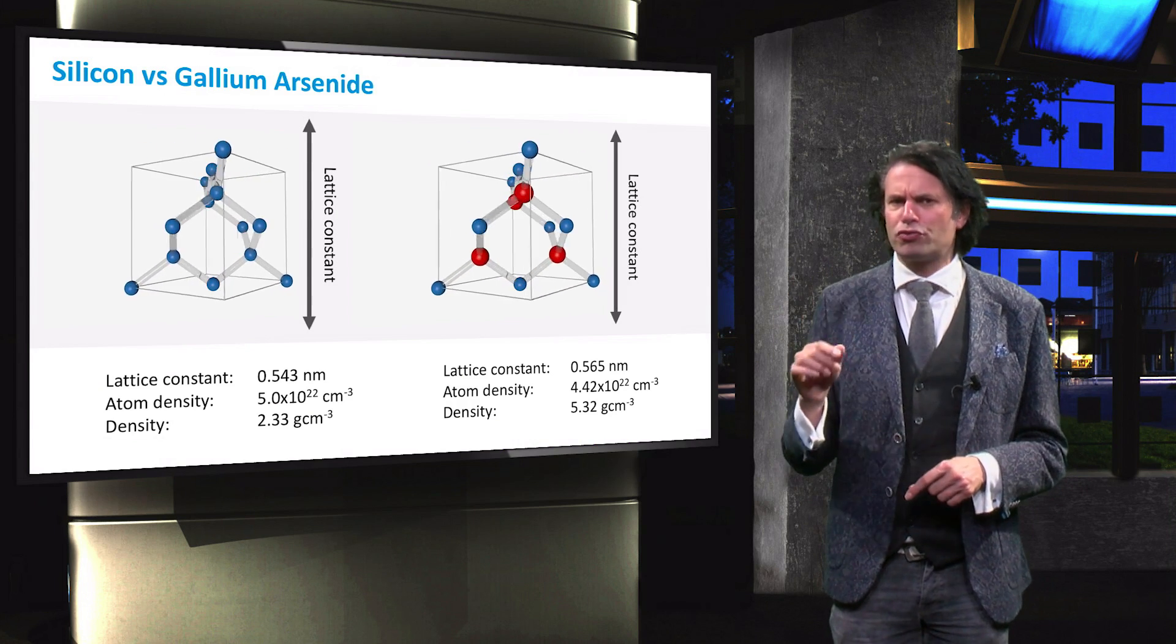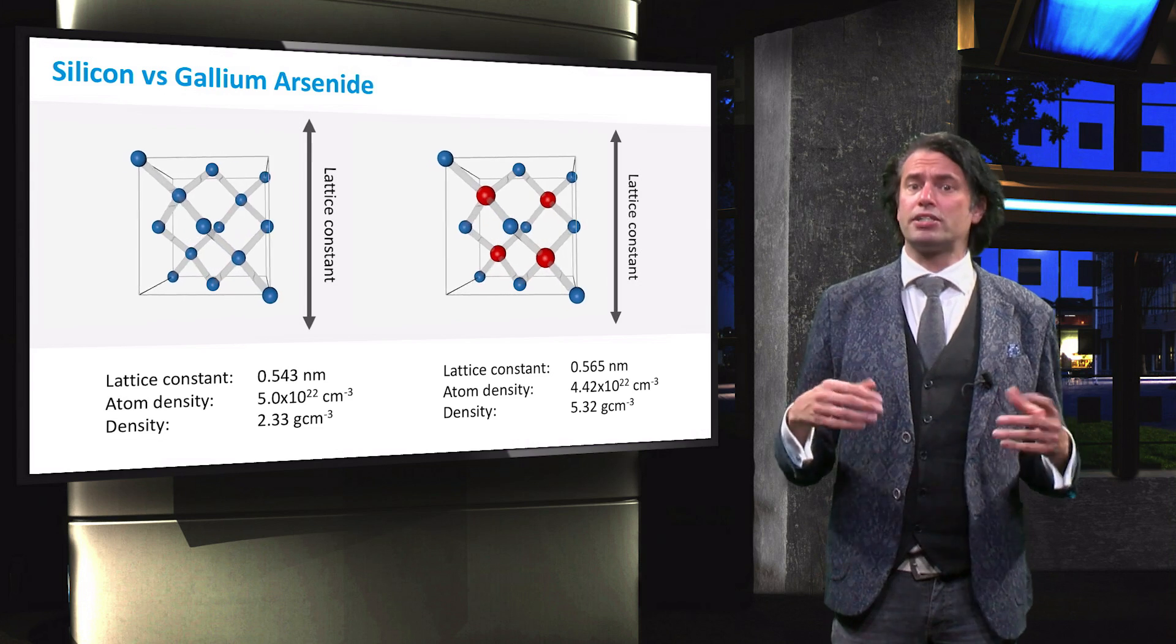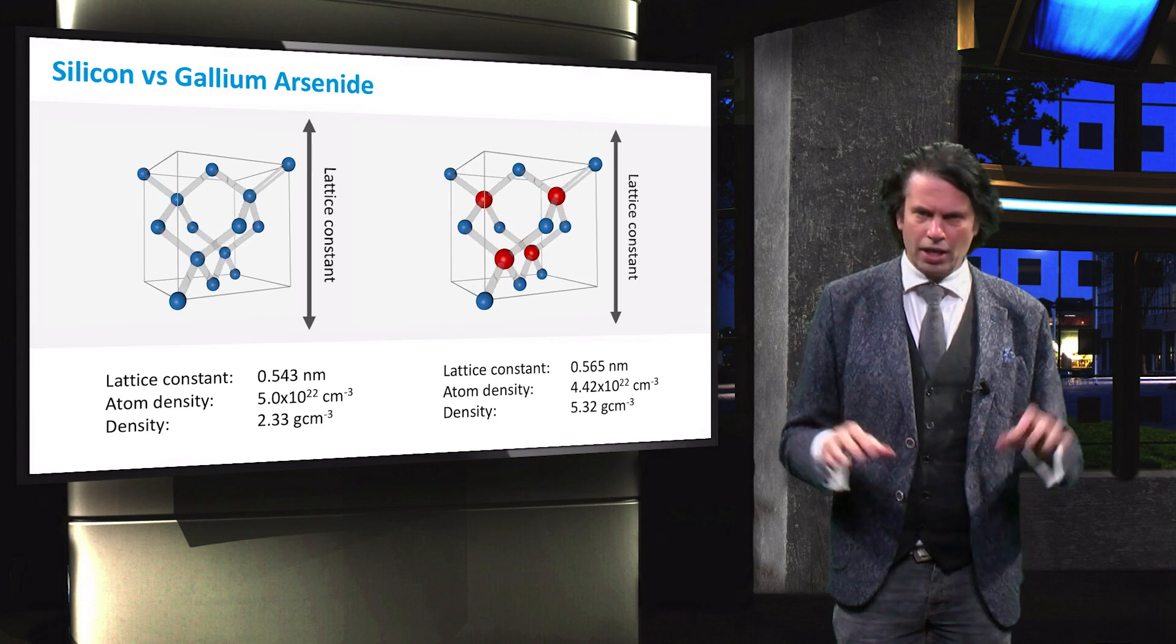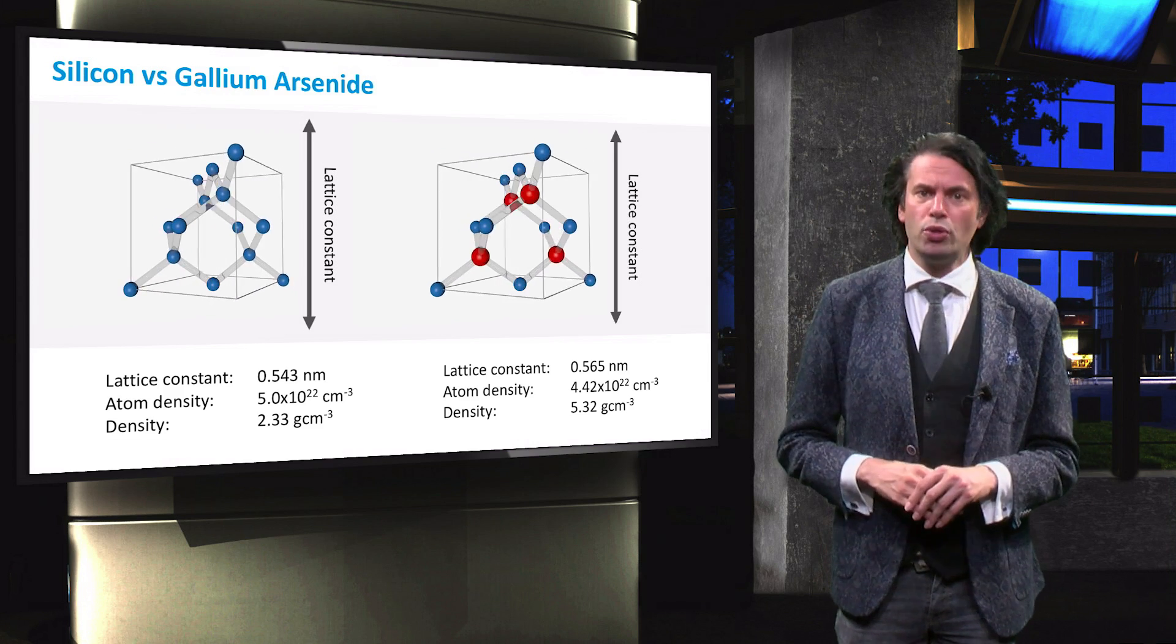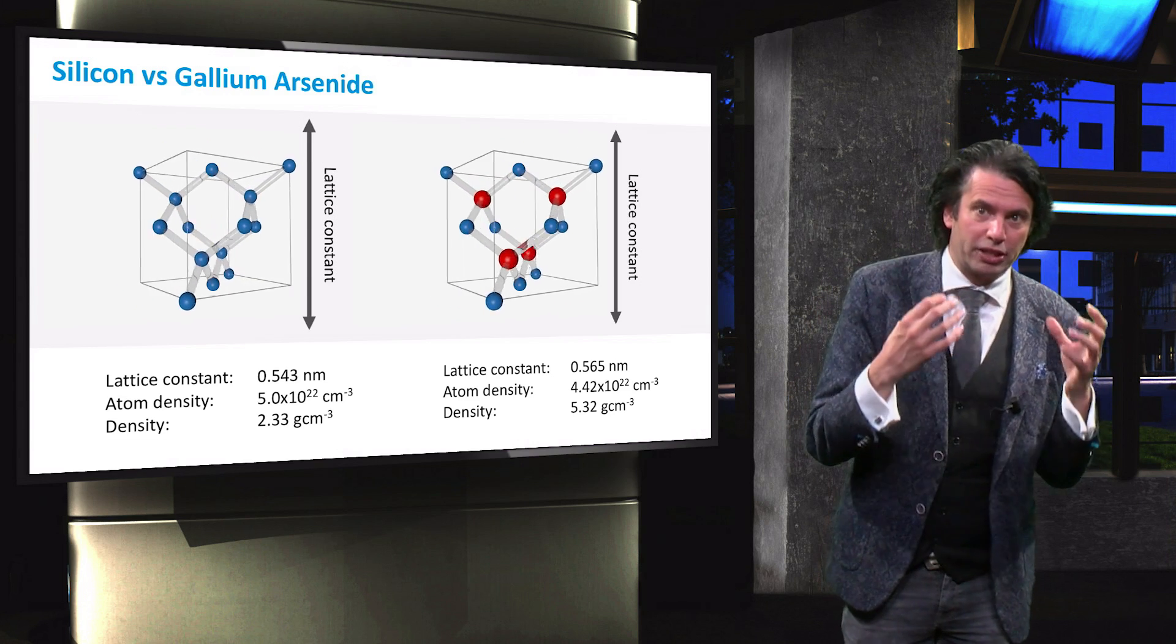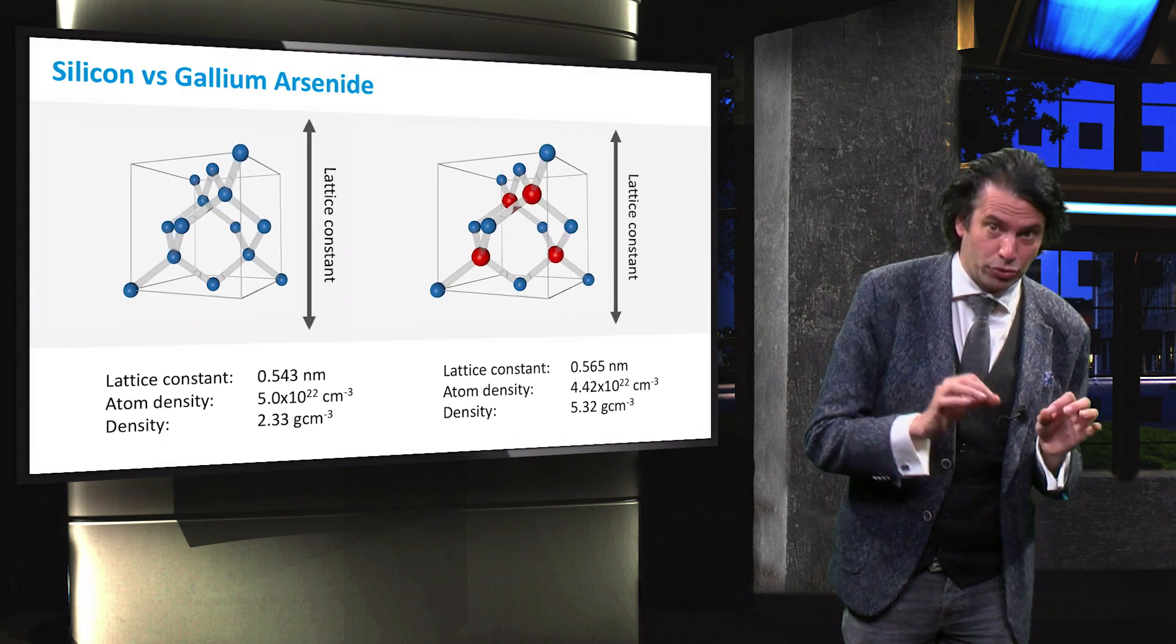As you may notice from the animation, both gallium arsenide and silicon lattice have a similar tetrahedral structure. The major difference between the two, however, is that silicon is a pure diamond cubic crystalline structure based on a single element,